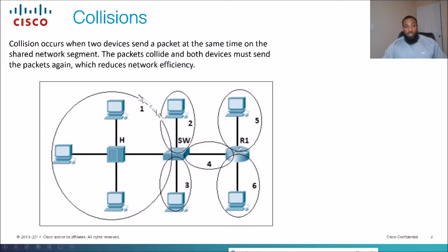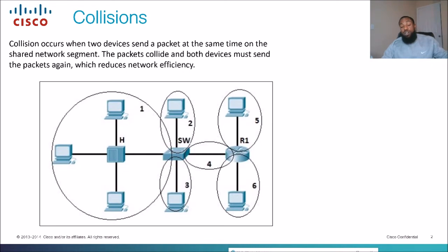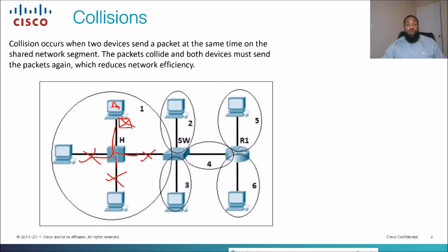These circles show where a collision could occur. This whole thing is considered a collision domain. Remember hubs — a hub takes a frame, once it comes in it floods it out of every port except from the port it came from. So if PCA sends a frame, it's going to flood it out every other port, and that's where all the collisions could occur. This entire area would be considered one collision domain.